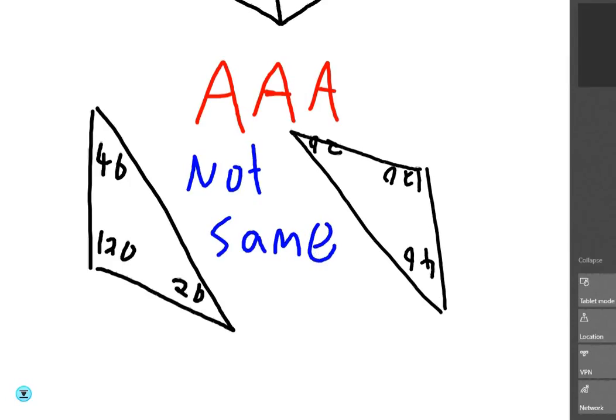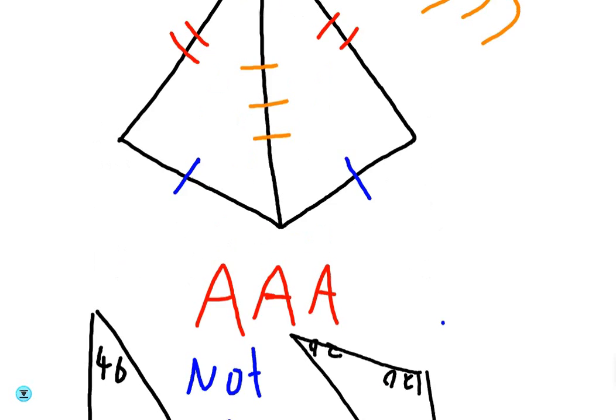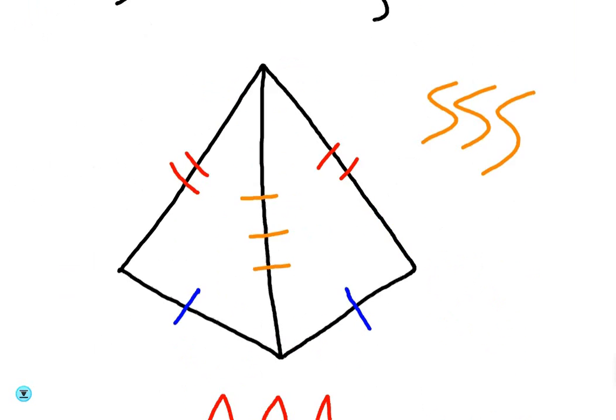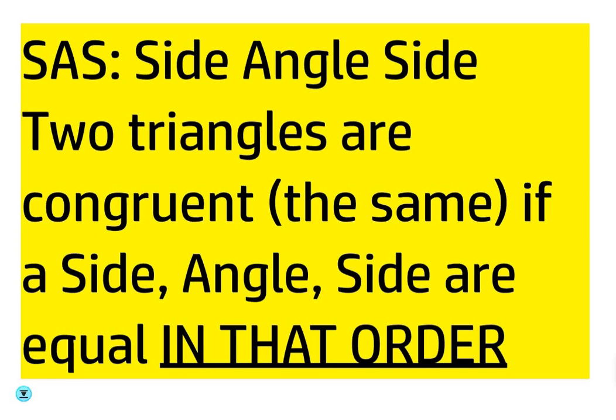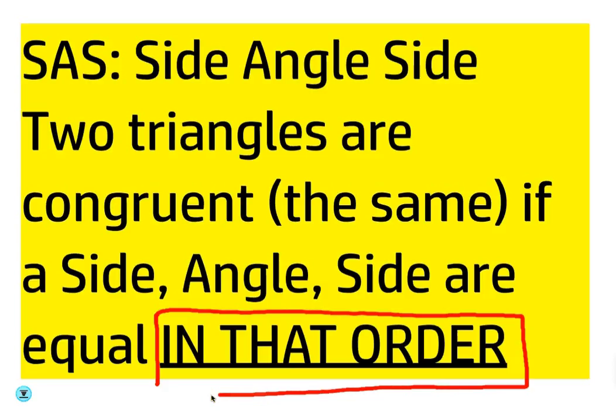So any questions about that before we look at side, angle, side? The gist of that is if the three sides are the same, then they're the same triangle. Okay, next we have side, angle, side. Two triangles are congruent if a side, angle, and side are equal, and I'm going to emphasize this last part, in that order. So it has to go side, angle, side.